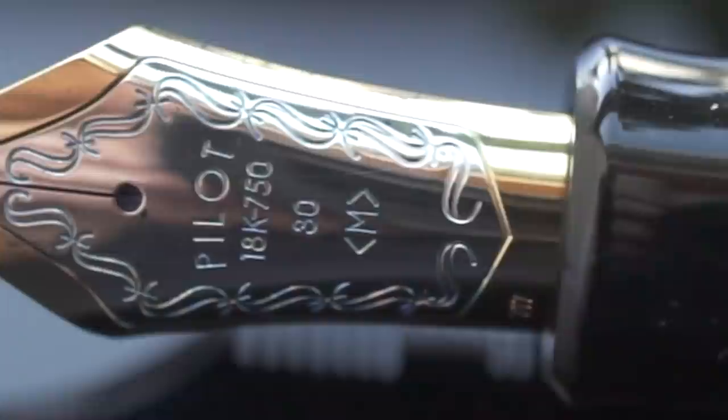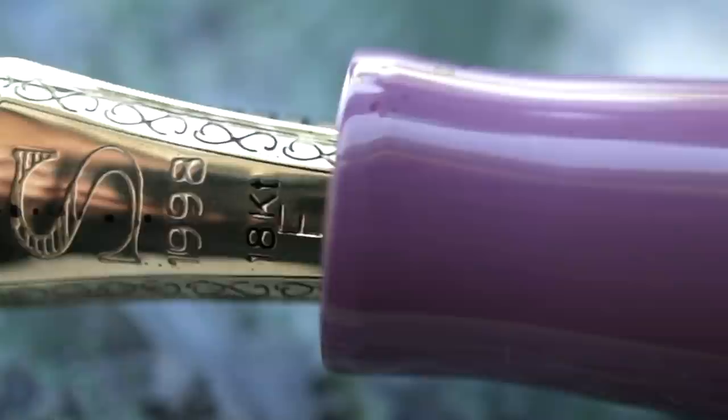And then 18 karat gold nibs have 750 on them because they're 75 percent gold.